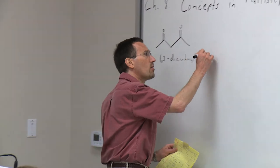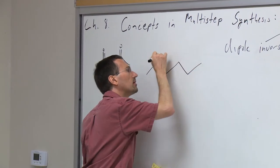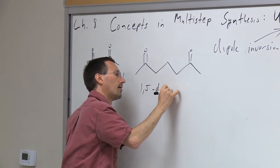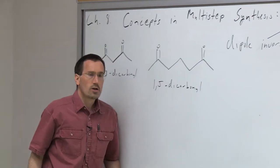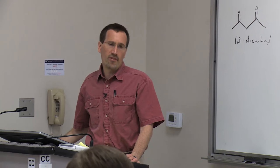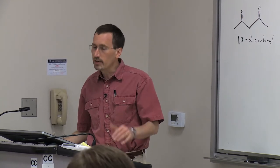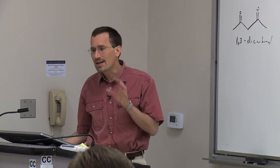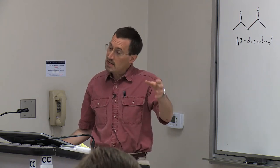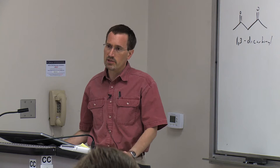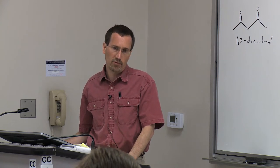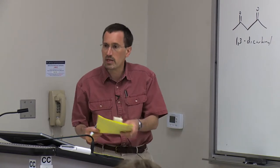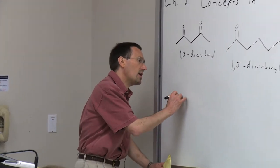If you look at a 1,5-dicarbonyl, you might recognize that this could come from the conjugate addition—the Michael addition—of an enolate to an alpha,beta-unsaturated carbonyl compound. Again, the natural propensity of the beta position of an alpha,beta-unsaturated carbonyl compound to be electrophilic and the natural propensity of the alpha position of a carbonyl compound in an enolate to be nucleophilic.